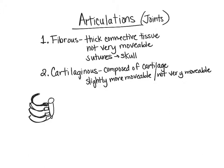We also see cartilaginous joints in the vertebral column, where cartilage sits between the bodies of the vertebrae. Looking at the vertebrae, you can see there's not much movement — we can't easily bend each individual vertebra. But there is some slight movement compared to fibrous joints in the skull. The third type of articulation is the synovial joint.